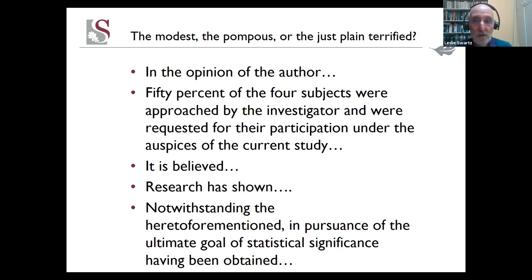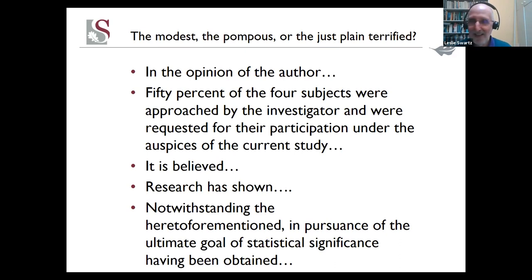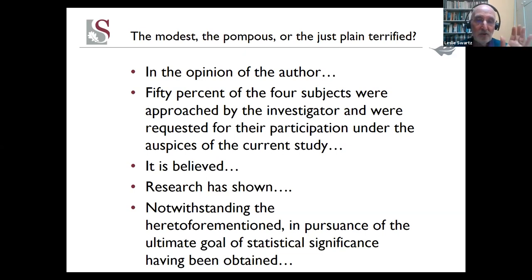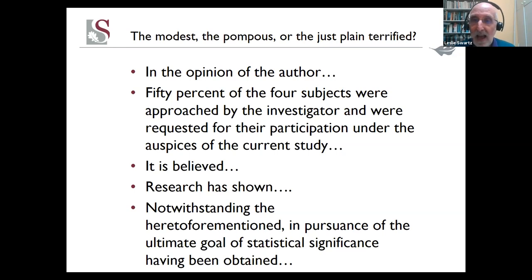Let me give you some actual published examples — all problematic. I want to go to the third one: 'It is believed.' Many of you have been taught you must write in the third person and the passive voice. That's not a good way to write. 'It is believed' is called an agentless passive — you don't know who believes it. You could write 'it is believed that the earth is flat' or 'it is believed that there are no rivers in Africa' — all those things are believed by somebody. Instead of '50% of the four subjects were approached by the investigator and were requested for their participation under the auspices of the current study' — how about: 'We approached two of the four people and asked them to participate.' Much clearer.